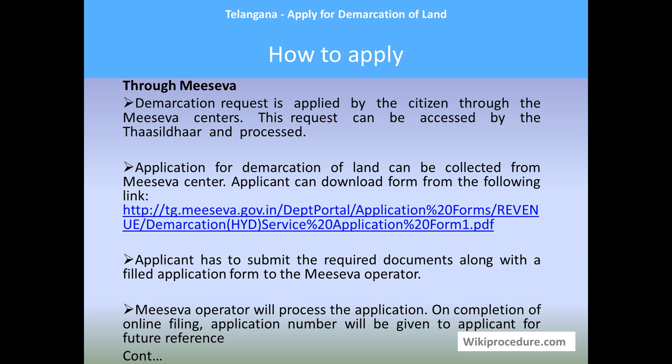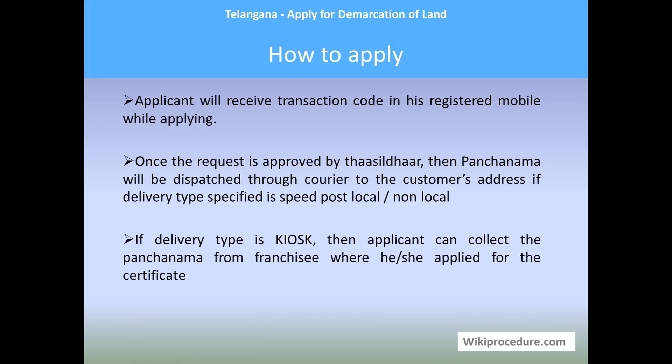Take the completed form along with the documents to the MeSeva operator at the center. The operator will receive the documents, process the application online, and complete all data entry for that application. Once complete, an application number will be generated — this is the main reference number for the transaction. The applicant can track the current status of their application using this number. The applicant will also receive a transaction code on their registered mobile number, which is important for keeping track of the application.